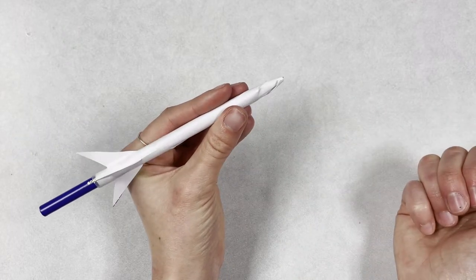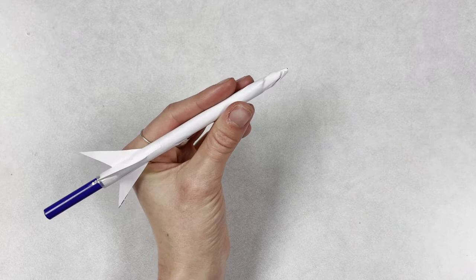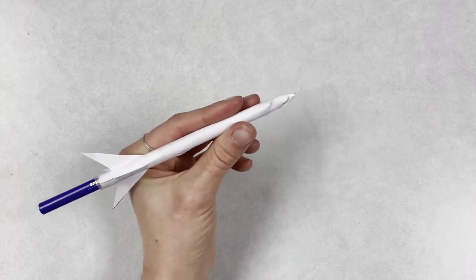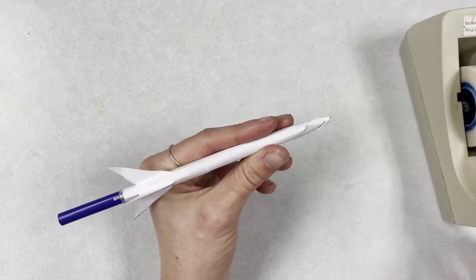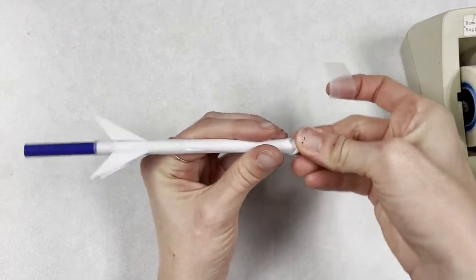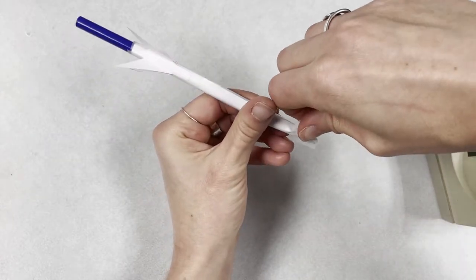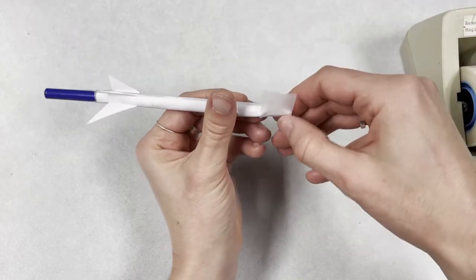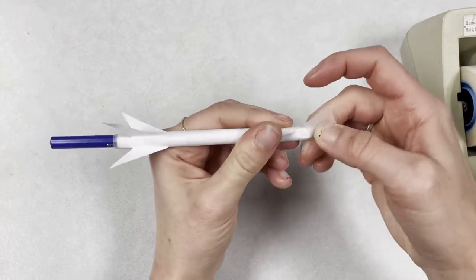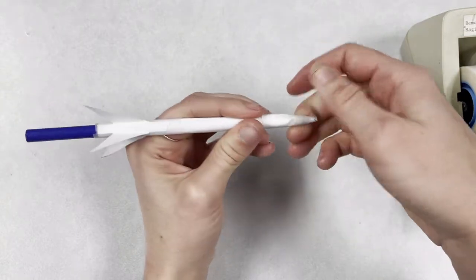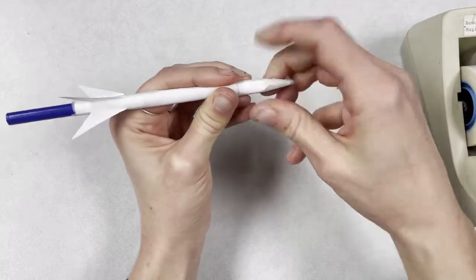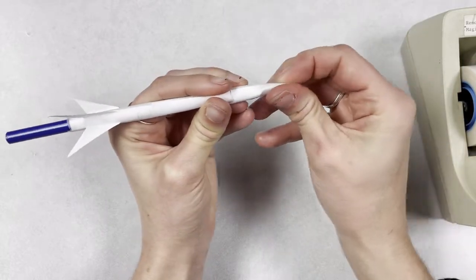And once I've got my nice pointy nose cone, I can grab my tape and just sort of tape the nose cone to itself so that it maintains that pointed shape. Just like that.